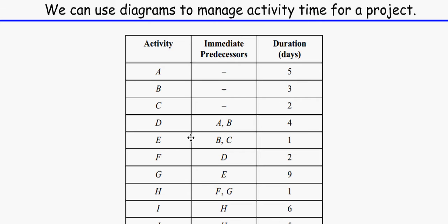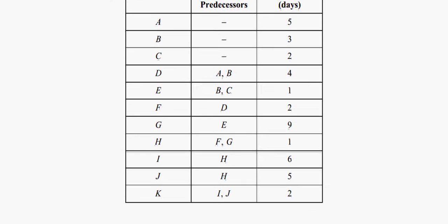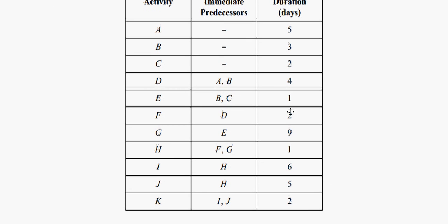For activity E, B and C need to happen first, and E only takes one day. The minimum start day will be day three, because even though C takes two days, we still have to wait for activity B. It goes on like this, and as you can see the longest one takes nine days, which is activity G.